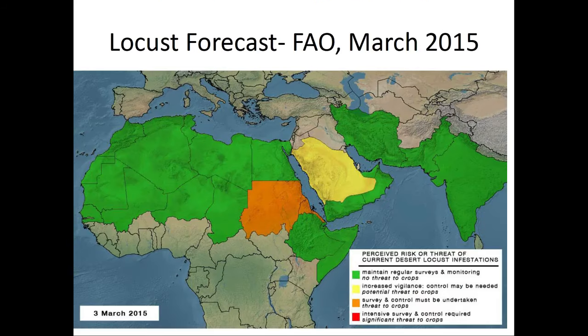Here is a locust forecast provided by FAO, the Food and Agriculture Organization, of which practically every country on earth is a member. FAO provided this forecast in March 2015 because locust is a major pest that causes immense damage to crops in many countries. Locust forecasting has been a major activity of FAO. This map shows, besides the color codes, a huge region ranging from the Atlantic coast all the way to the Bay of Bengal and Indian Ocean.